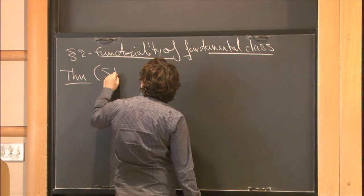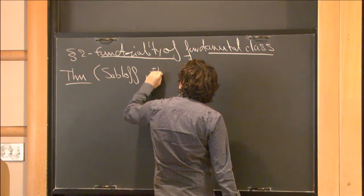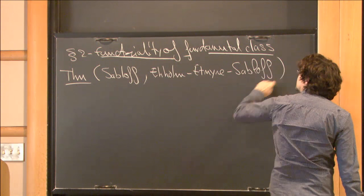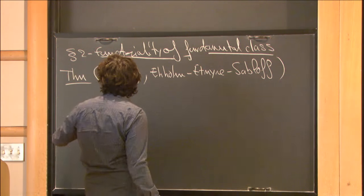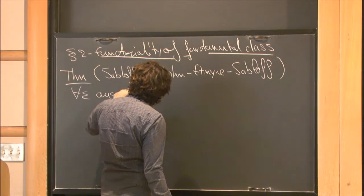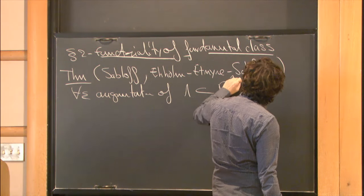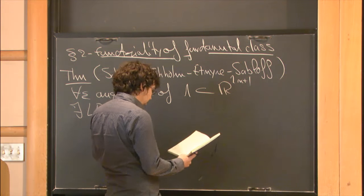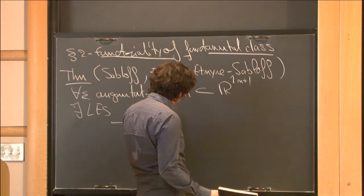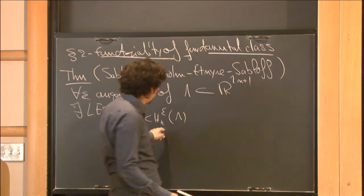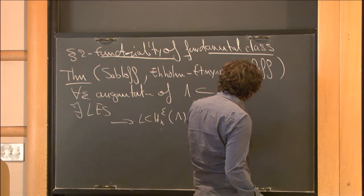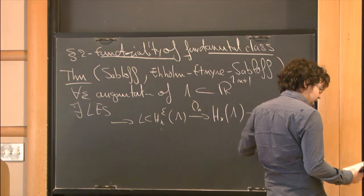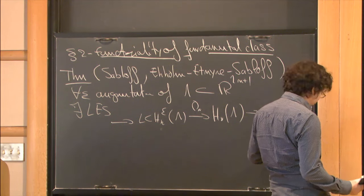The first result, due to Josh Zabloff in dimension one and to Ekholm-Honda-Kálmán in higher dimension, is the following: for any augmentation ε of a Legendrian submanifold λ in ℝ^{2n+1}, there exists a long exact sequence involving the linearized Legendrian contact homology of λ, the singular homology of the underlying manifold λ, and the Legendrian contact cohomology of λ, which then returns to Legendrian contact homology.